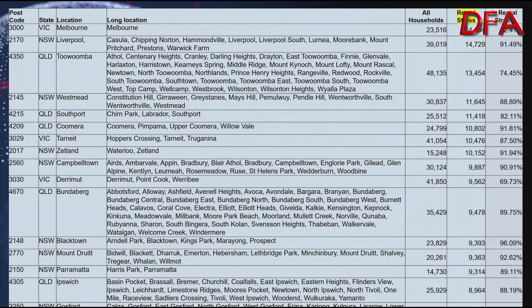At the aggregate level, whilst there are 1.8 million households in mortgage stress across the country, we've got 2.3 million households in rental stress. The highest proportion of households in rental stress — more than 83.6% — are in New South Wales, then the ACT at 83.46%, dropping to 75.12% in Victoria, 71.9% in Western Australia, and smaller counts in other states. The top postcodes by count include postcode 3000 in central Melbourne with more than 14,900 in stress, followed by Liverpool and Toowoomba, Westmead, Southport, Tarnit, Zetland, Campbelltown, Point Cook, Bundaberg, Blacktown, Mount Druitt, Parramatta, Ipswich, and Gosford.